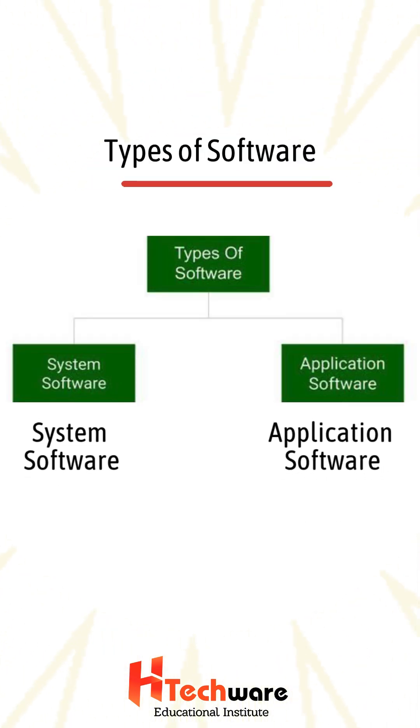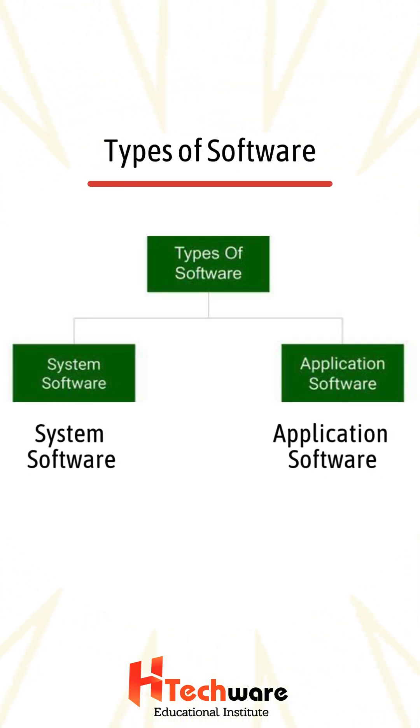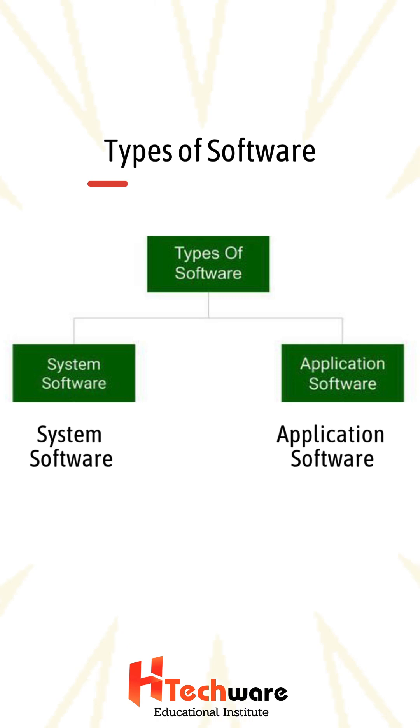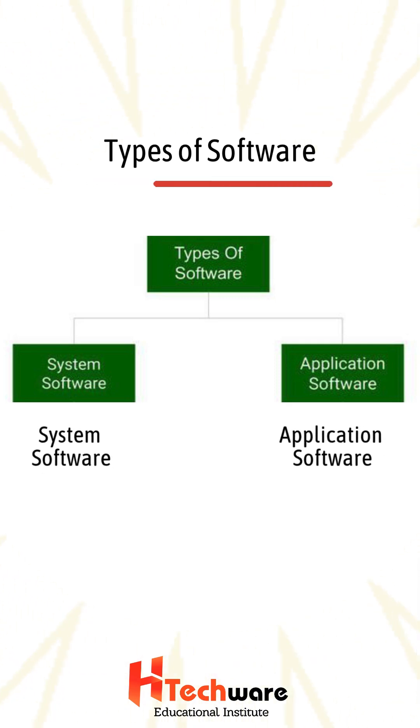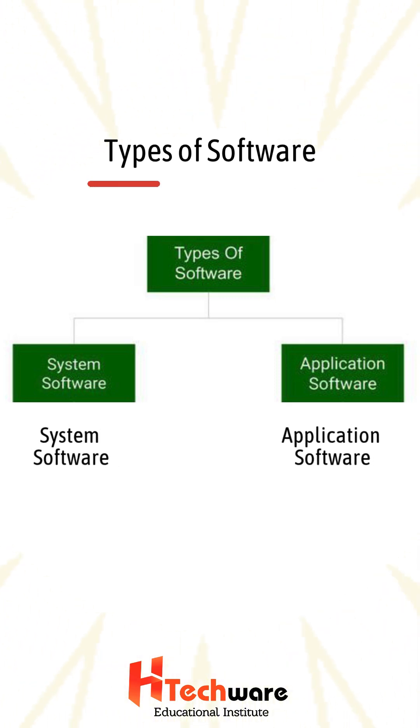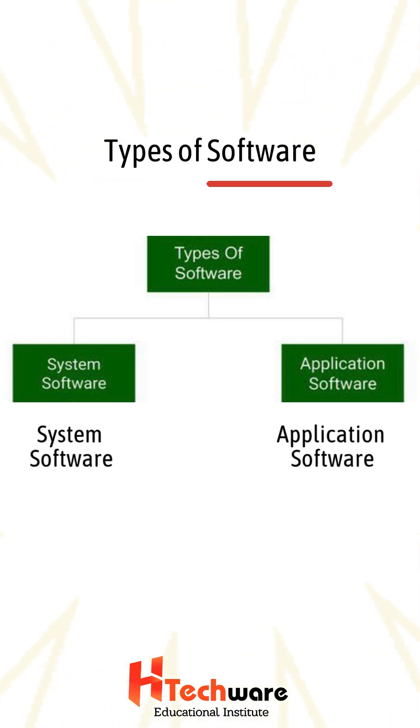Types of software: There are two types of software — system software and application software.